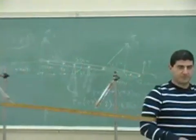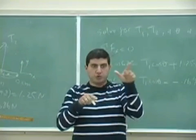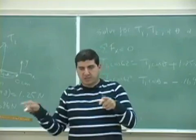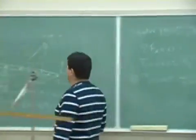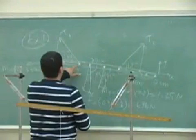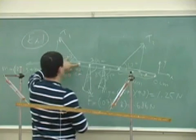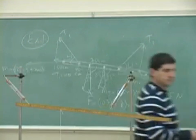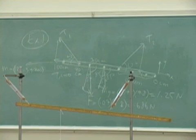Why? If there's the most number of unknowns at that point, then the torques due to that force are zero at that point — because remember, torque depends on R, R crossed into F. So the torque, if I choose this as my point, the torque of the tension T1 about that point is already zero, so I don't need to know theta — it eliminates that. So I'm going to choose that point.